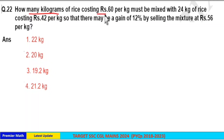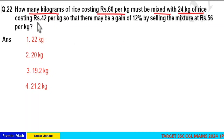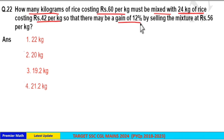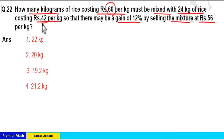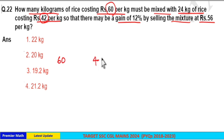How many kilograms of rice costing rupees 60 per kilogram must be mixed with 24 kilograms of rice costing rupees 42 per kilogram, so that there may be a gain of 12 percentage by selling the mixture at rupees 56 per kilogram? Here we have two varieties of rice — one costs ₹60 per kilogram and the other costs ₹42 per kilogram.